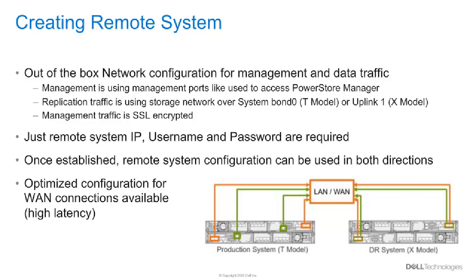Once clusters are configured after running the initial configuration wizard with assigned storage IPs, all required network port configuration is already set and you are able to start with replication immediately. For management connection, the communication is via the management ports, like it is used to access the PowerStore manager. Replication or data traffic is sent over the storage network and shares bandwidth with the hosts. When the defaults are not changed, replication ports are mapped to system bond using port 0 and 1, and the 4-port card for T-model or uplink port for PowerStore X models.